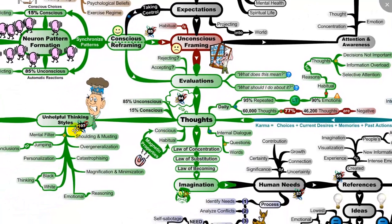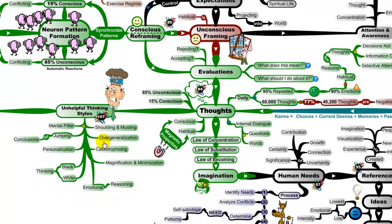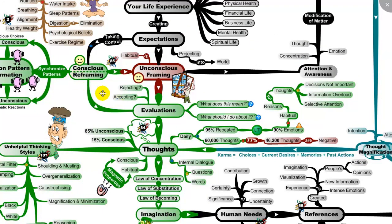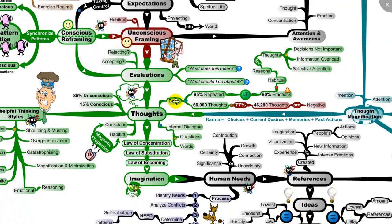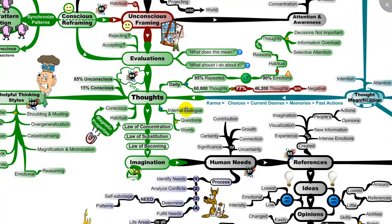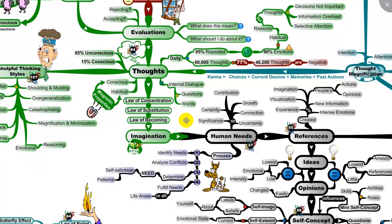Here we've got different unhelpful thinking styles that we often indulge in — habits of thought that often hurt us. We make evaluations and frame and reframe reality in various ways. It is estimated that we have roughly 60,000 thoughts per day, 77% of which — about 46,200 thoughts — are of a negative nature for the average person. Daily, 95% of our thoughts are repeated, and 90% are habitual emotions we continually indulge in. That's why we relive each day the same way — we experience the same thoughts, the same emotions, and not a lot changes.